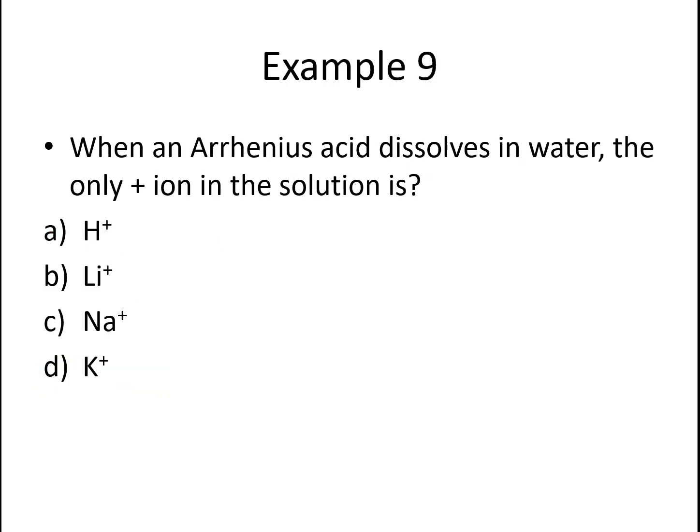Let's look at example nine. When an Arrhenius acid dissolves in water, what is the only positive ion in solution? Well, if we're talking about a classic Arrhenius acid, A has to be our only choice. They all release hydrogen or hydronium ions.